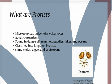Secondly, it is important to know what protists are. Protists are microscopically unicellular eukaryotes. They are mostly aquatic organisms. They are found mainly in damp soil, marshes, puddles, lakes, and the ocean. They are grouped into the kingdom of protista.